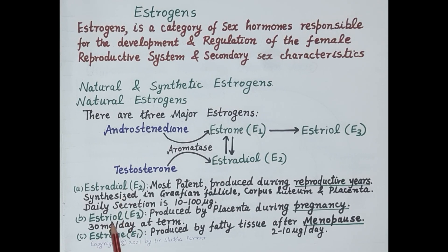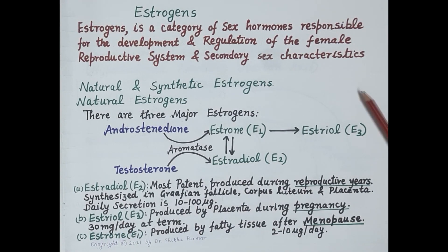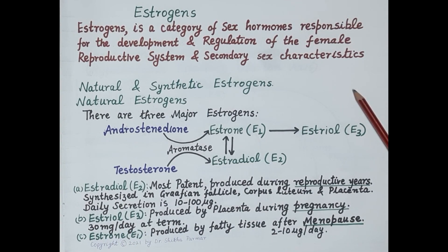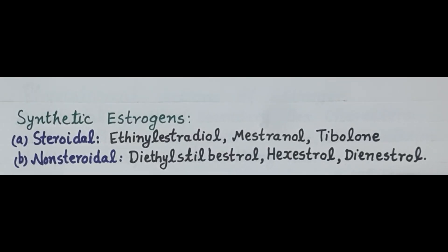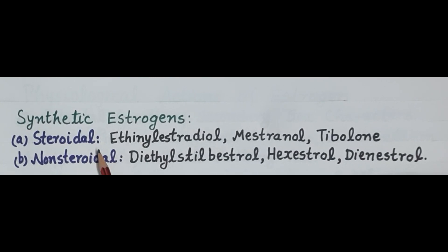Thus, estradiol is the main estrogen during reproductive years, estriol is produced during pregnancy, and estrone is the dominant estrogen in postmenopausal women. All these natural estrogens are rapidly metabolized in the liver, and thus they are inactive orally and exhibit a very short duration of action. Therefore, synthetic estrogens have been developed.